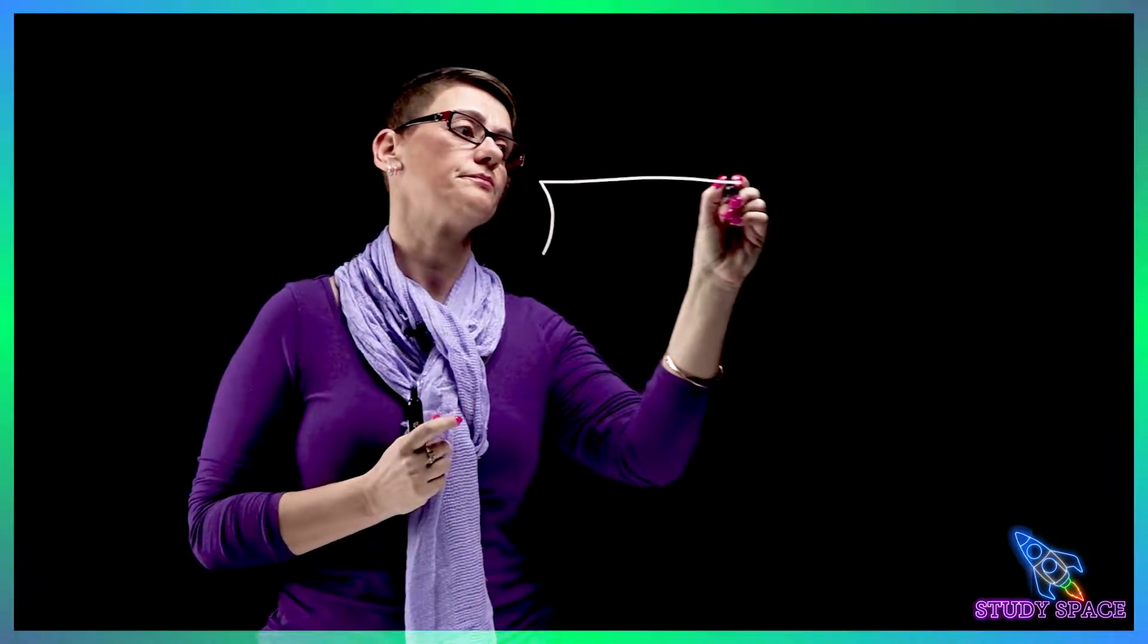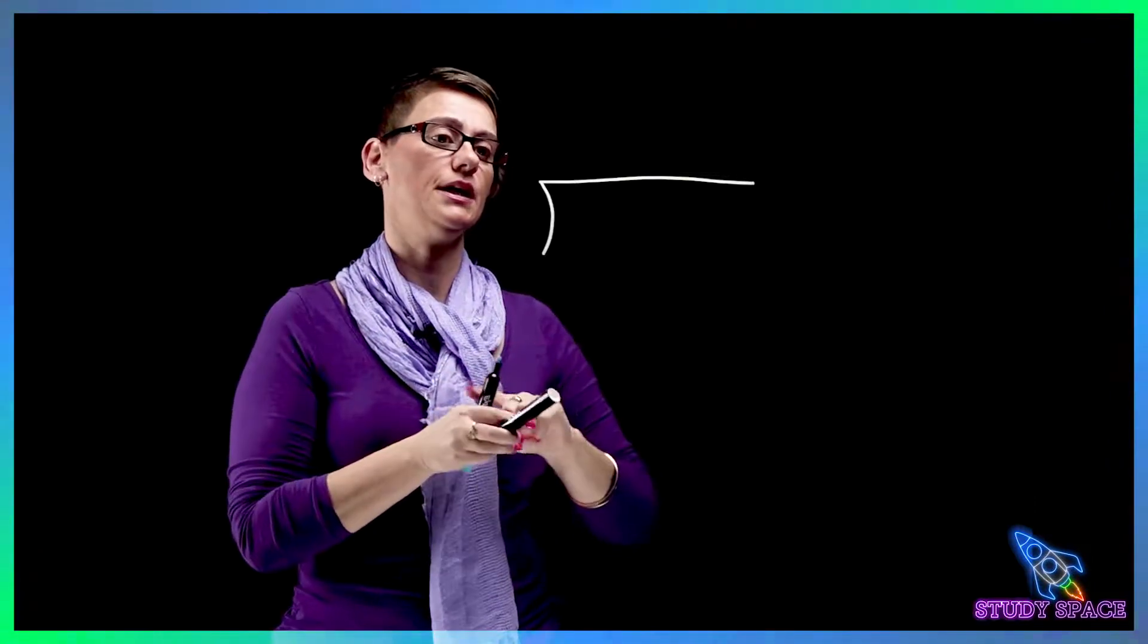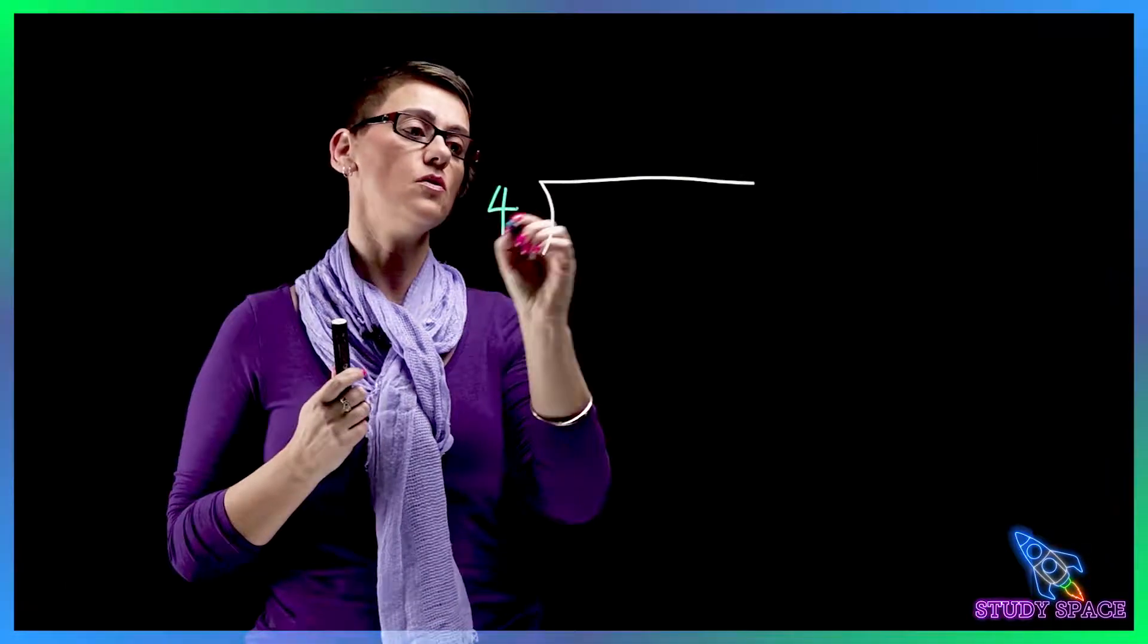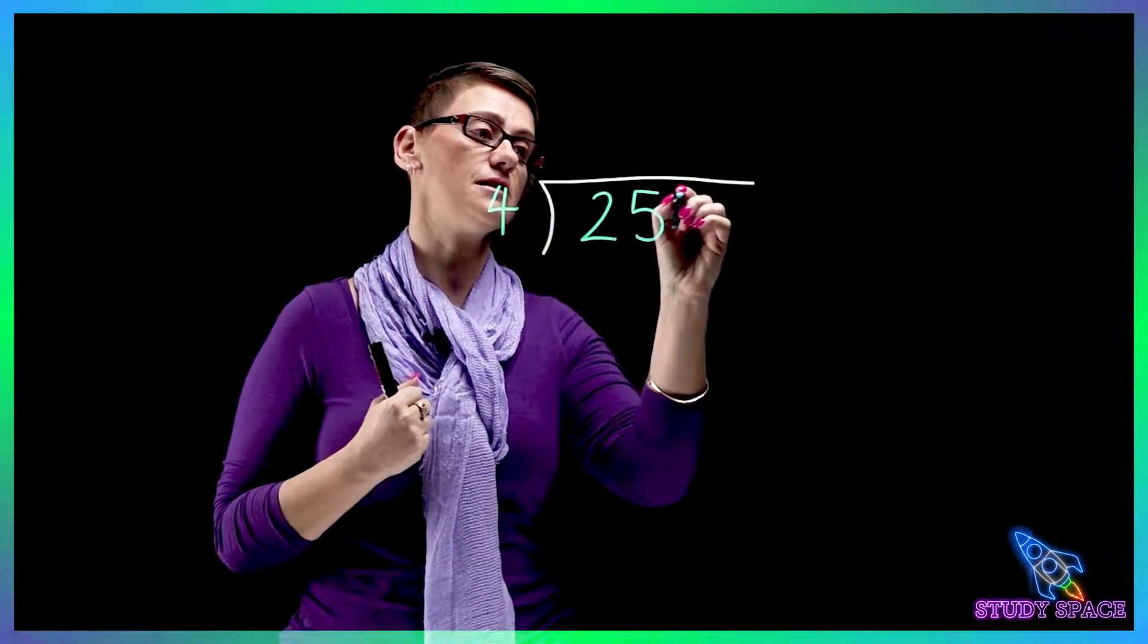So boys and girls, let's talk about short division with remainders or leftovers. So what do we do with the leftovers? Let me show you using an example. So we need the short division symbol which looks like this. And our question is, let's do 4 into 257.